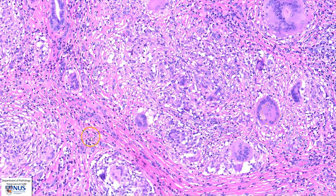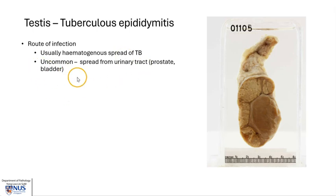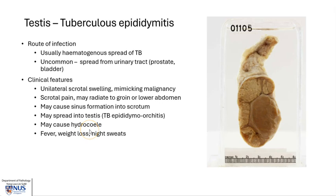Let's learn a bit more about tuberculosis of the testis. TB of the testis often occurs as a result of hematogenous spread from the bloodstream, and often the original site of infection is the lung. Uncommonly, it can also be a result of spread from the urinary tract structures, including the prostate and the bladder.